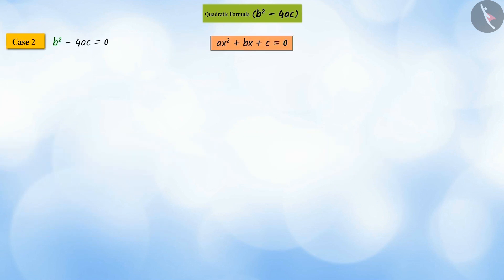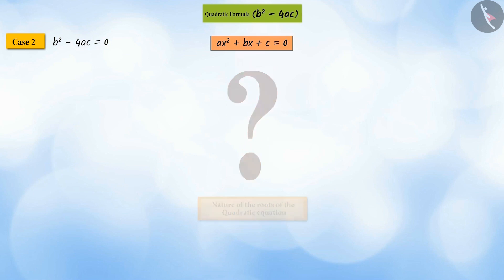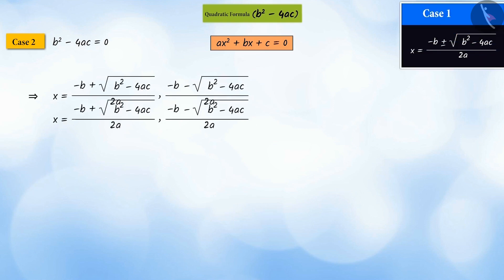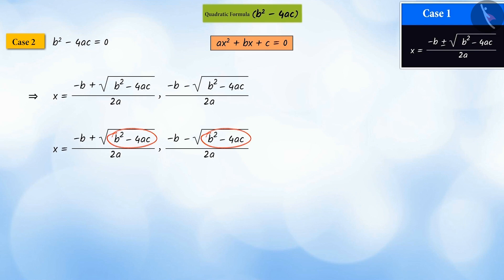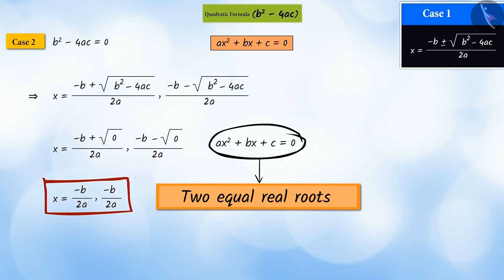Similarly, if we consider b squared minus 4ac as zero, can you say what would be the nature of the roots of the quadratic equation? If we substitute zero in place of b squared minus 4ac, then we get two equal real roots, that is x equals minus b divided by 2a.